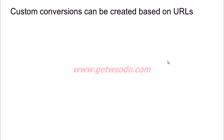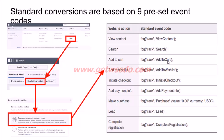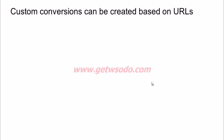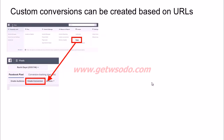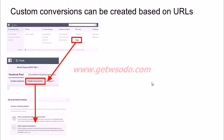Then you have custom conversions — these are created based on URLs. For a custom conversion, you don't really have to edit the code at all. In standard events, you have to edit your pixel code through your tech team and ask them to add those specific standard codes into the pixel. For a custom conversion, you would go through the same process — click on pixels, click on create conversion — and then choose the second tracking method, which is track custom conversions.